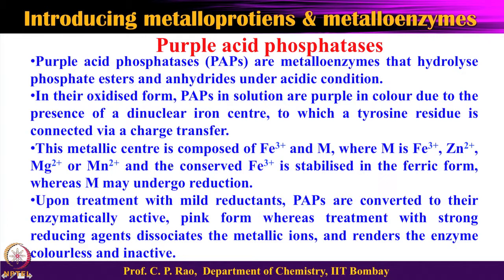The active centers of these enzymes are all composed of Fe3+ as one metal, and the second metal ion could be Fe3+, Zn2+, Mn2+, or Mg2+, found in different kinds of species. Fe3+ is the one conserved in all cases, while the second metal ion is replaced by zinc, manganese, magnesium, or another Fe3+ depending on the organism.